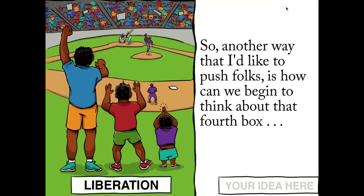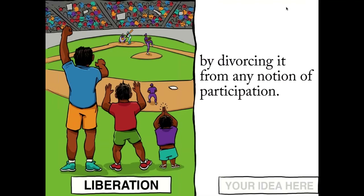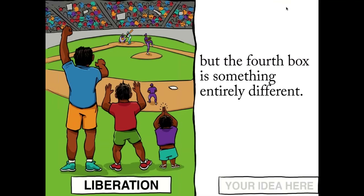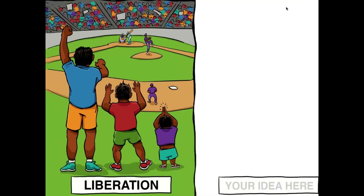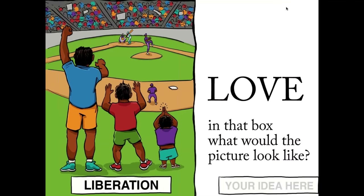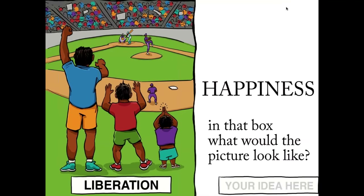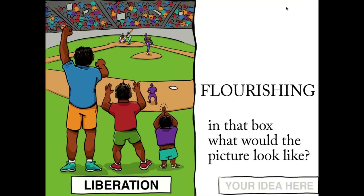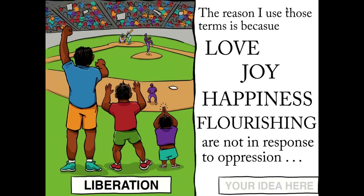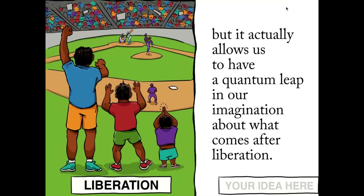Another way I'd like to push folks is: how can we begin to think about that fourth box by divorcing it from any notion of participation? We're not thinking about the fourth box as simply greater forms of participation — the fourth box is something entirely different. If I put the word joy in that box, what would the picture look like? If I put happiness in that box, what would that picture look like? If I put flourishing in that box, what would the picture look like? Love, joy, happiness, and flourishing are not in response to oppression — they allow us to have a quantum leap in our imagination about what comes after liberation.